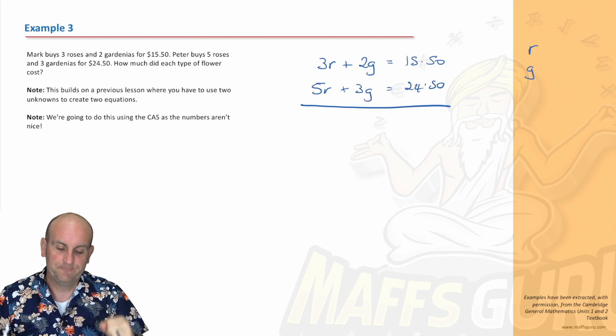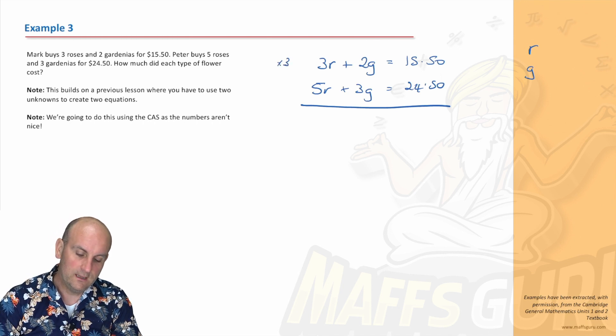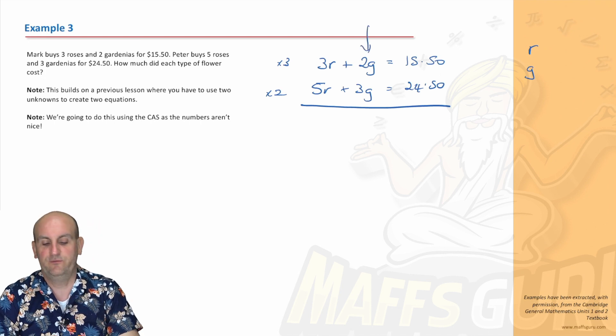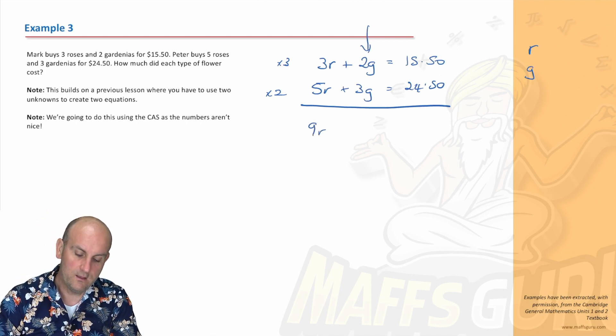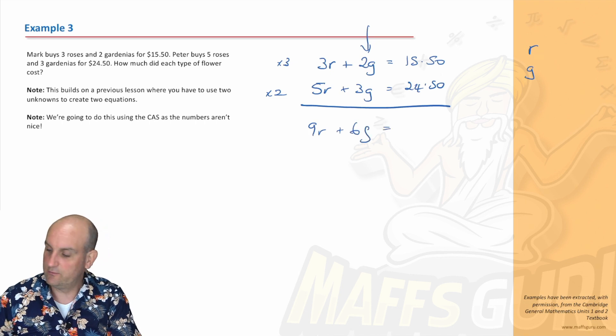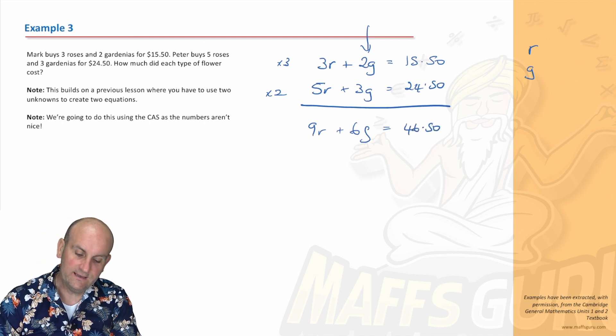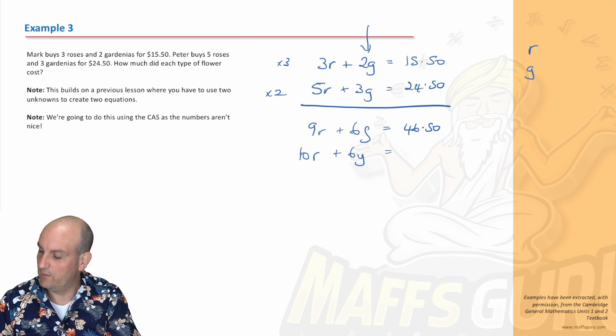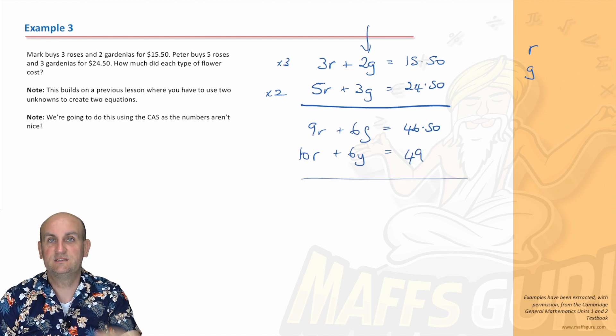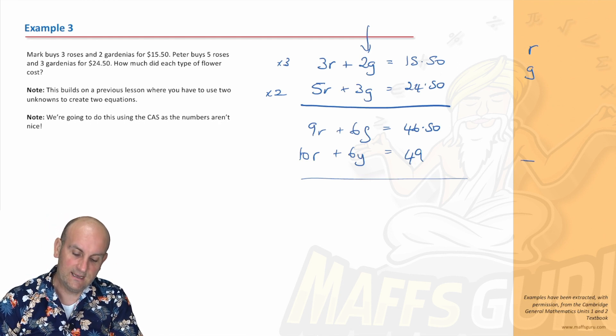Am I going to do this for substitution? Nope, because I don't have R equals or G equals. So let's look at this as an elimination question. Are the R's the same? Nope. Are the G's the same? No. So we're going to make them the same. I'm going to multiply the top one by 3 and the bottom one by 2 because I'm going to make the G's the same. Top equation multiplied by 3 gives me 9R plus 6G equals $46.50. Bottom one becomes 10R plus 6G equals $49. The 6G's are the same. Plus and plus, remember, take them away. 9 minus 10 is minus 1R equals 46.50 minus 49 gives me minus $2.50.